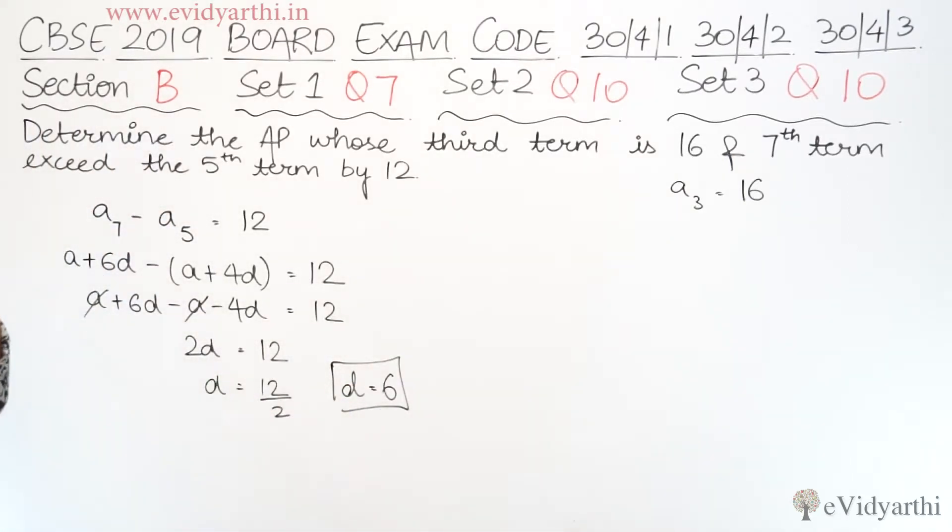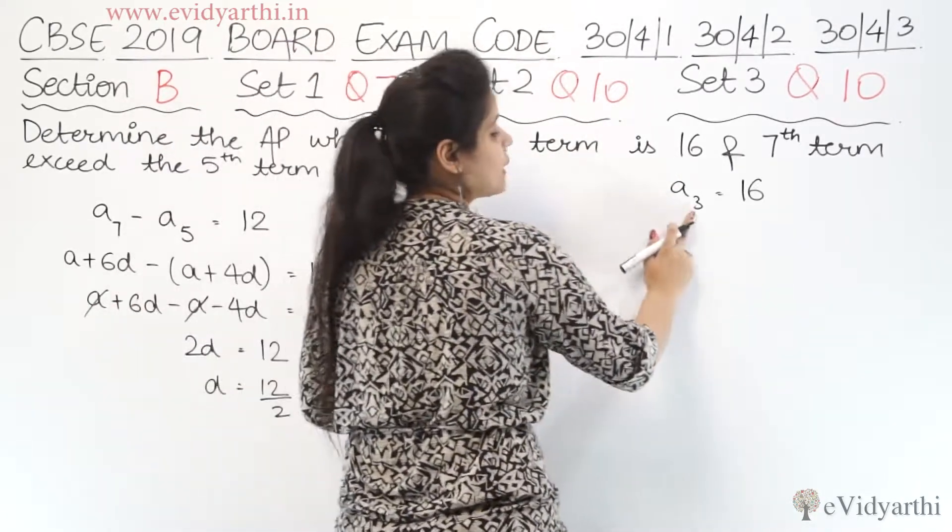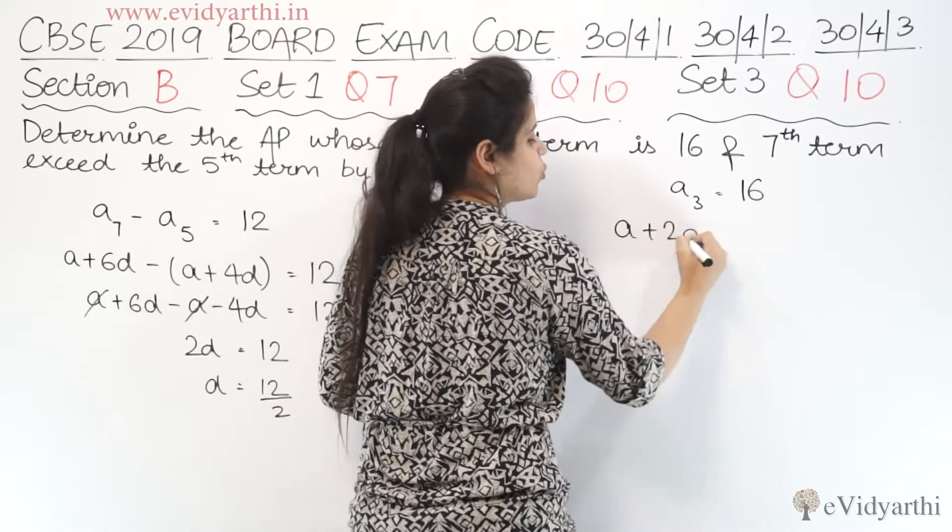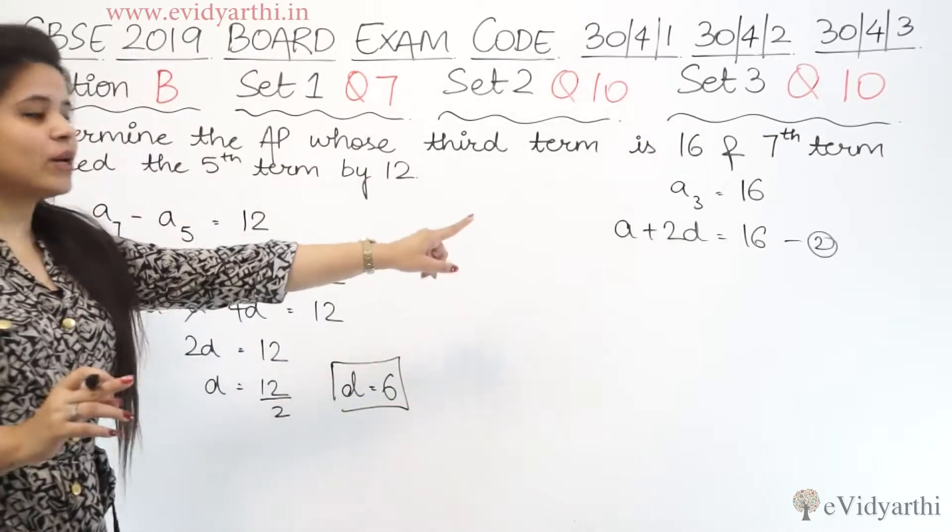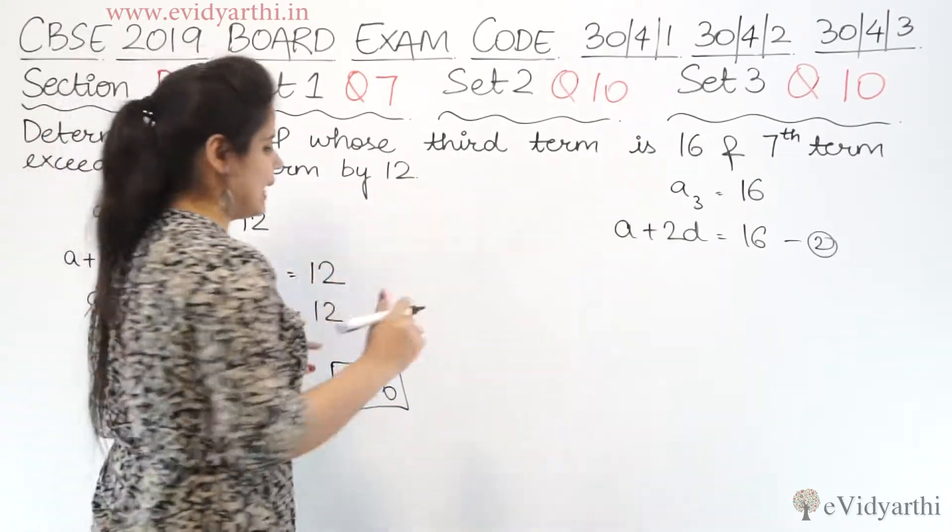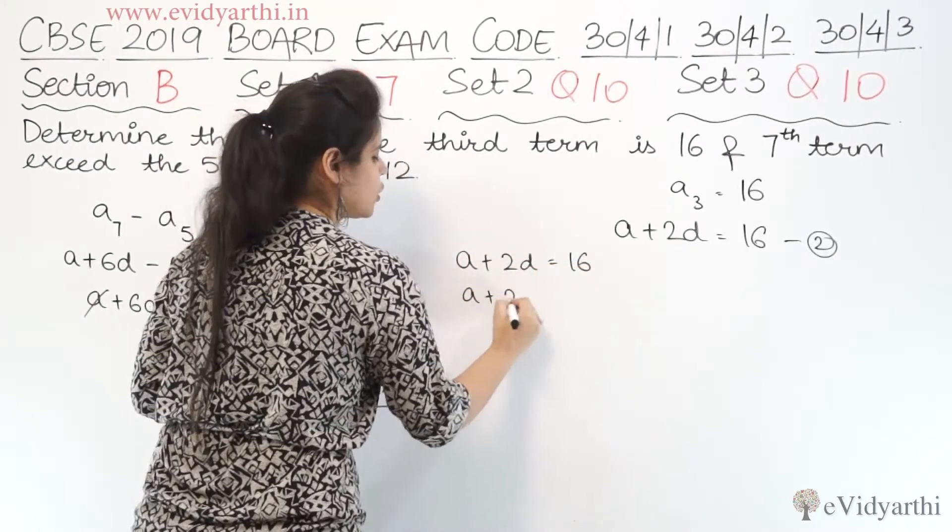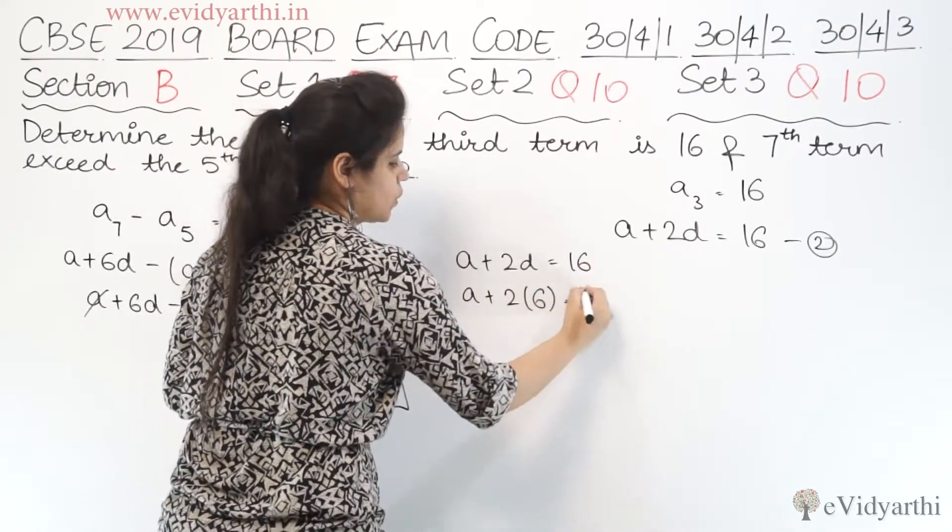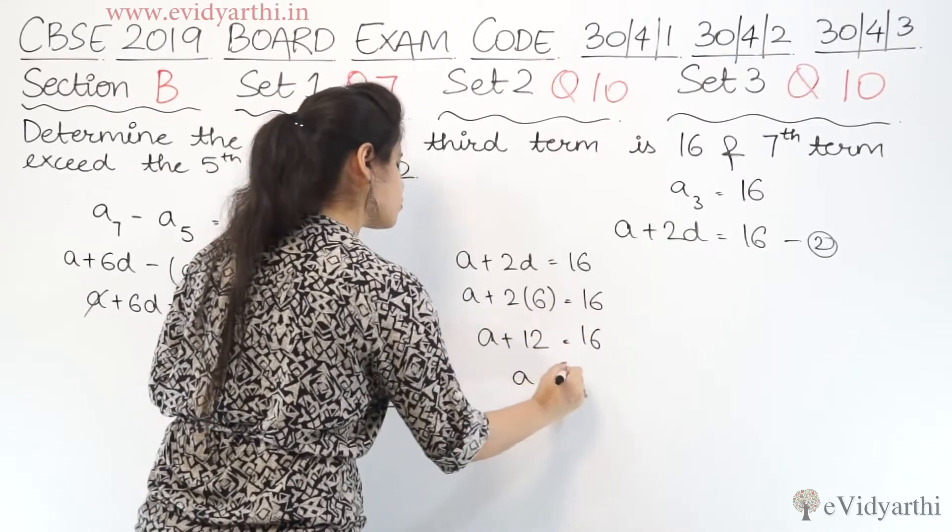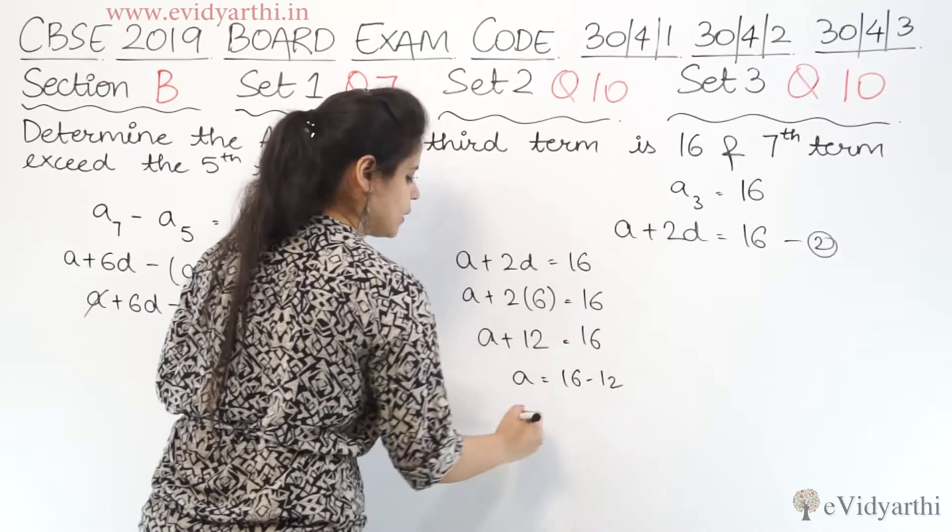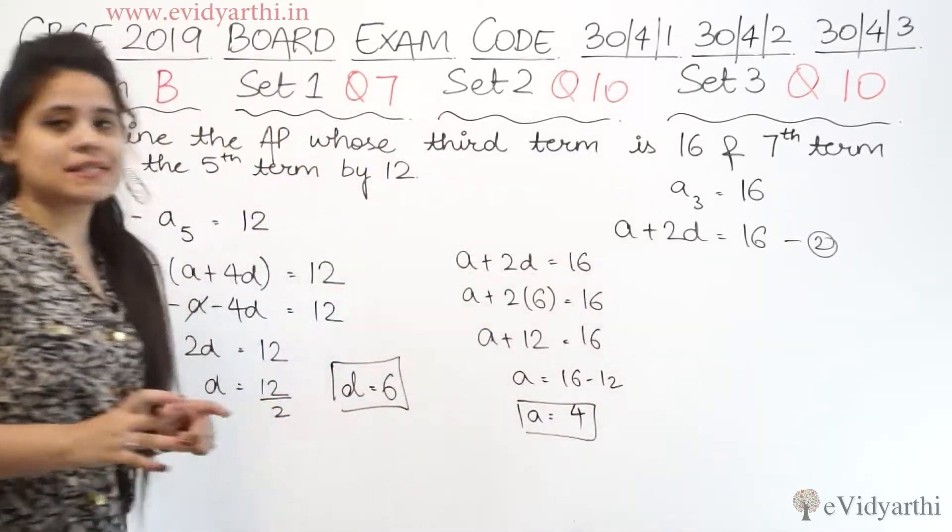Now we have the common difference but we don't have the value of a. So to find a, we use the third term. Third term means a plus 2d equals 16. This is given. So if we put the value of d in this equation, we will get a. So we have a plus 2d equals 16. d is 6. So a plus 12 equals 16. a will be 16 minus 12. 16 minus 12 gives us 4. So therefore a is 4.